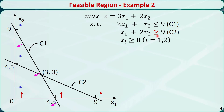In this example, the second constraint is changed to a greater than or equal to sign. So the feasible region of the second constraint c2 is above this line, and the feasible region of the linear programming problem is changed to the new shaded area.